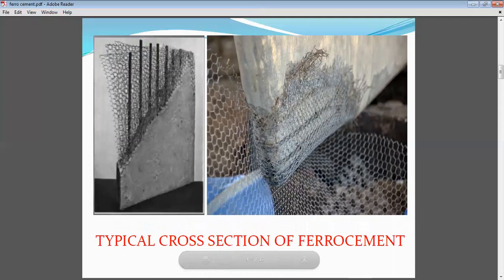Here you have the wire meshes, and this is what we call ferro-cement. Usually in a residential building when we talk about showcases, we call it ferro-cement because you don't want thick brick walls there, so we prefer ferro-cement. That is the usual procedure. In some cases we also use ferro-cement in parapet walls. That is where we commonly use ferro-cement.